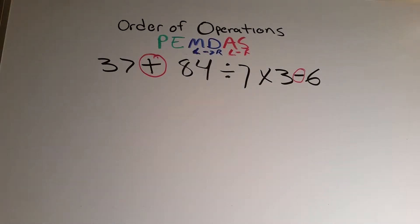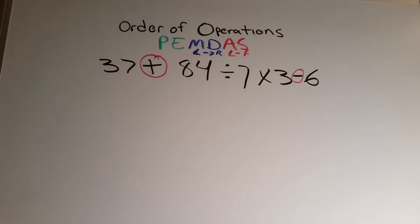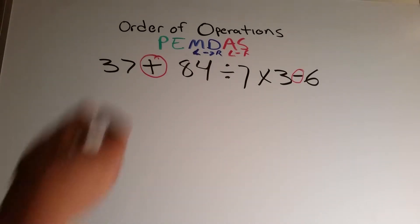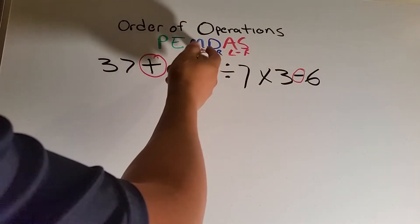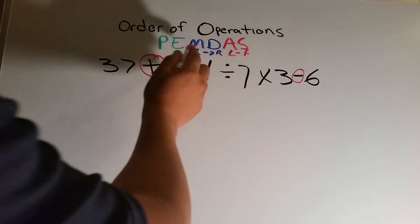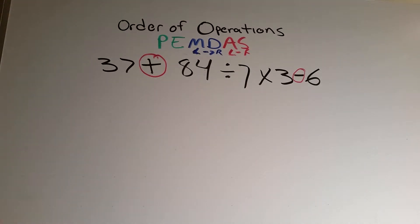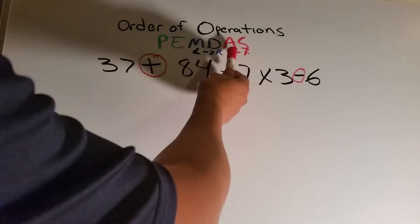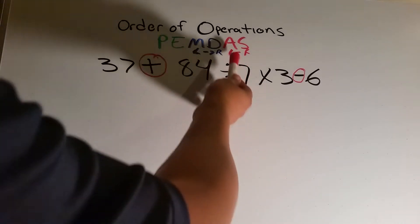Now, remember, I told you that you're going to see how doing this improperly makes a difference. So first, we're going to do it the wrong way. If you don't know that in PEMDAS, multiplication and division are the same — and you do them depending on whichever comes first from left to right — then you're going to make this mistake. Same thing with addition and subtraction: they're the same, and you do them left to right.